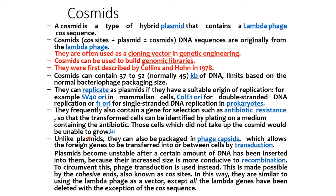Unlike plasmids, Cosmids can also be packaged in phage capsids, which allow the foreign gene to be transferred into cells by transduction. Plasmids become unstable after a certain amount of DNA has been inserted into them because their increased size makes them more susceptible to recombination. To circumvent this, phage transduction is used instead, made possible by cohesive ends also known as Cos sites. In this way they are similar to using lambda phage as a vector, except all the lambda phage genes have been deleted with the exception of the Cos sequence.